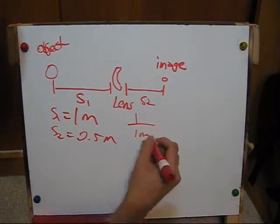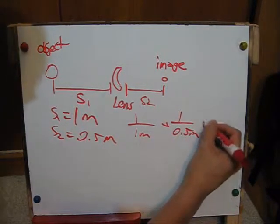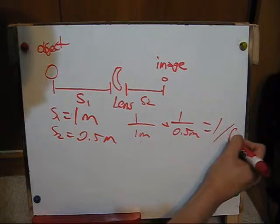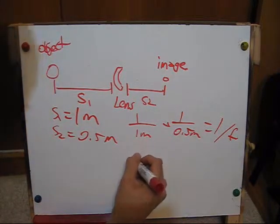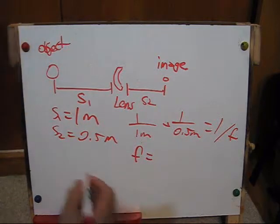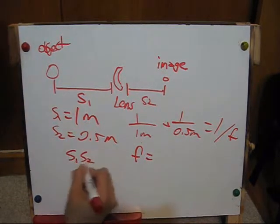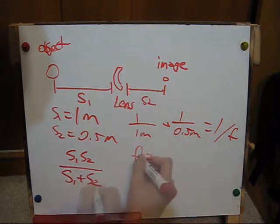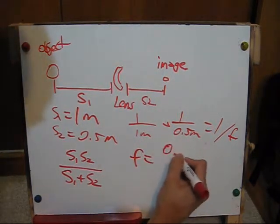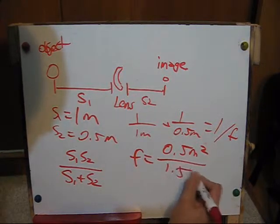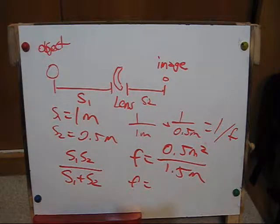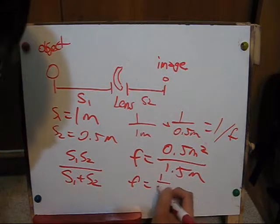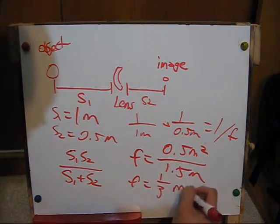Plugging it into the equation and solving for f using the original equation that we derived, you get 0.5 meters squared over 1.5 meters, which is one-third of a meter.